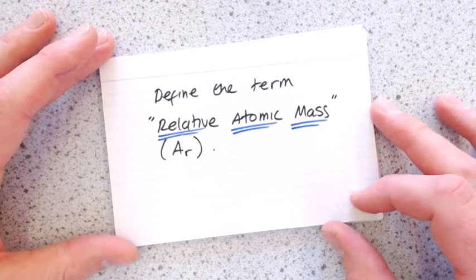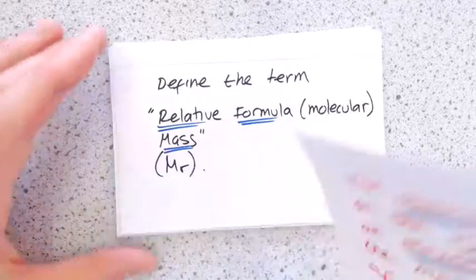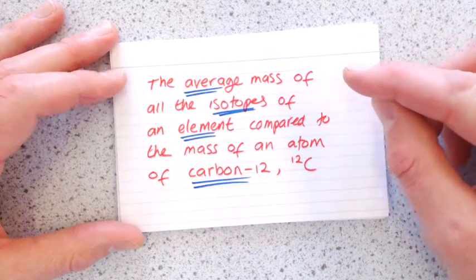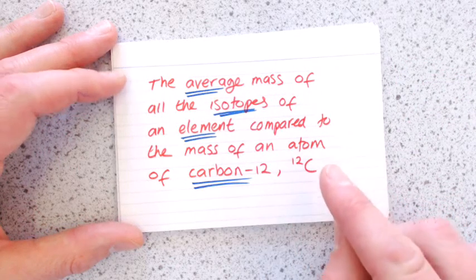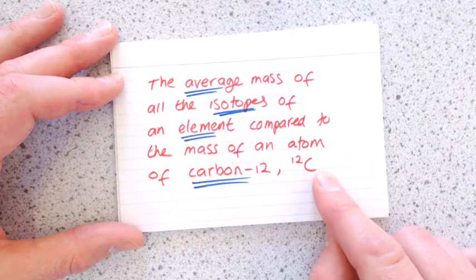Define the term relative atomic mass, shorthand AR. This is the average mass of all of the isotopes of a particular element, and that's then compared to the mass of an atom of carbon 12, sometimes written as C12.